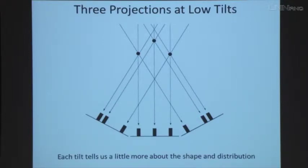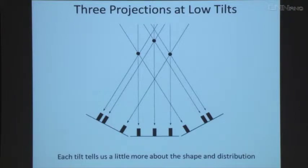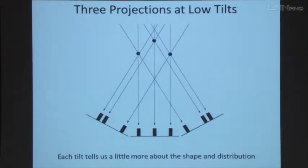Here's a really simple example. We look at three projections of a simple object — just a triangle of round objects — at three different orientations. At zero degrees, we can see they're evenly spaced along that direction, but we'd have no idea of their relative heights from just that single projection. But if we take images at different orientations, we can see that one projection shows these two are closer together and this one is farther away, and then tilting the other way shows a different arrangement. So as we get different tilt angles, each tilt tells us a little bit more about the distribution and shape of the underlying objects. Every single angle we get gives us a little more information, and we can build that up in the computer and reconstruct what our actual object is.